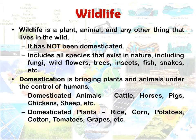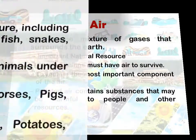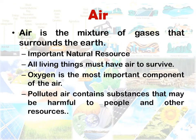Domestic plants include rice, corn, potatoes, and many others. Regarding air: our atmosphere contains a lot of nitrogen, and oxygen is around 21%. Without air you cannot survive. Plants release oxygen, which we take in, and we release CO2, which plants use. That is why we have to keep air clean and prevent pollution.